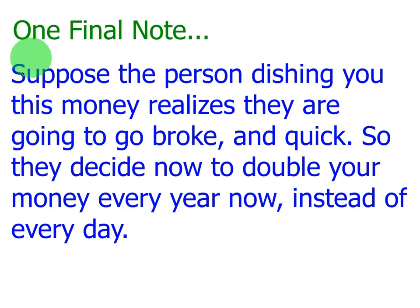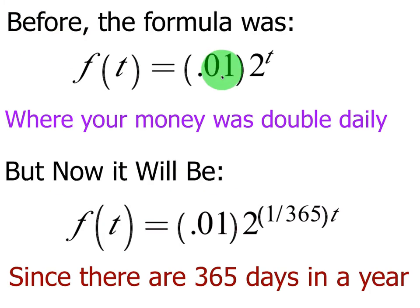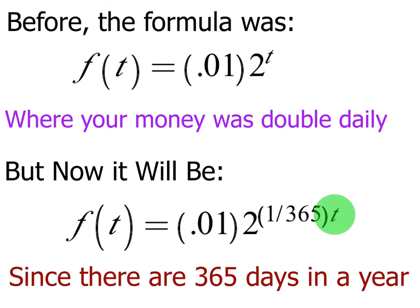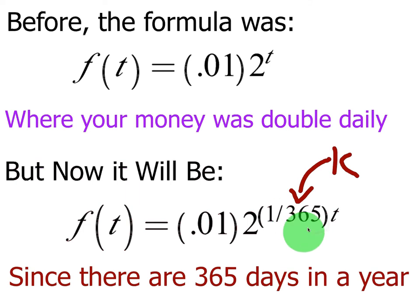Suppose the person paying you this money realizes they're going to go broke. Your employer backs up and says they can't just double a penny a day for 30 days — they'd end up paying $20 million. So they decide to double your money every year instead of every day. Before, the formula was 0.01 times 2 to the t with daily doubling. Now it will be: F of t equals 0.01 times 2 to the (1/365)t. This number next to t in the exponent is called the growth constant, denoted by the letter k.